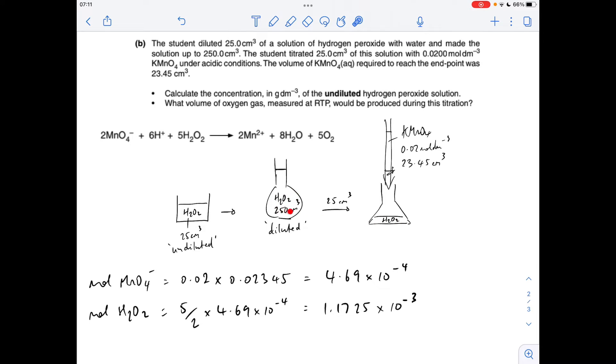We want to know how many moles were in here. So obviously that's just 10 times that. So 1.1725 times 10 to the minus 2 in the 250.